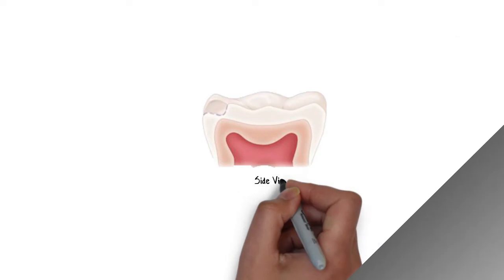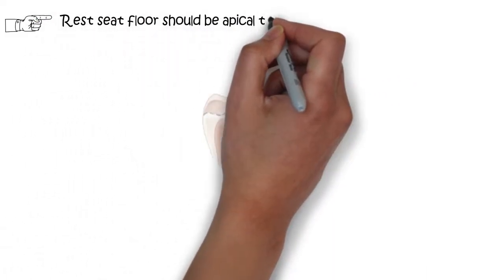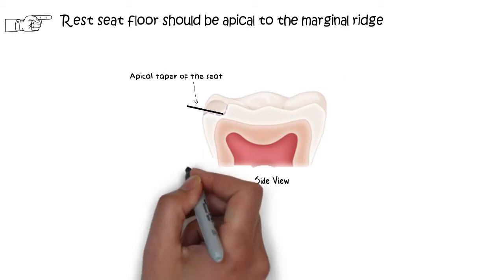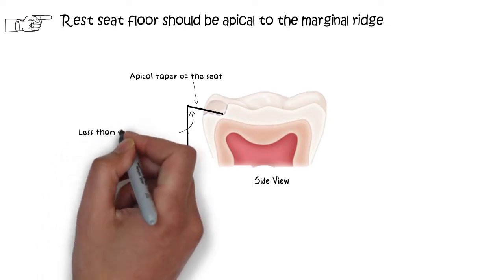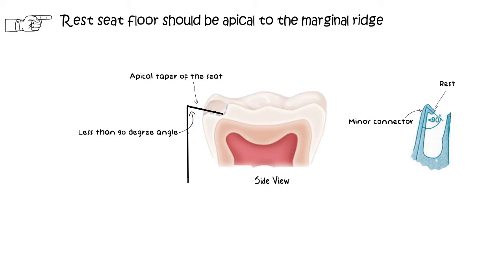When viewed from the side, the floor of the occlusal rest seat should be apical to the marginal ridge. In other words, the rest seat form should be made tapering and lowered from the marginal ridge. Just a little taper will be enough. The purpose of this taper is that when the rest comes and sits inside the rest seat, the angle formed between the rest and the connecting minor connector should be less than 90 degrees. Anything less than 90 degrees is acceptable, but this angulation is very important.